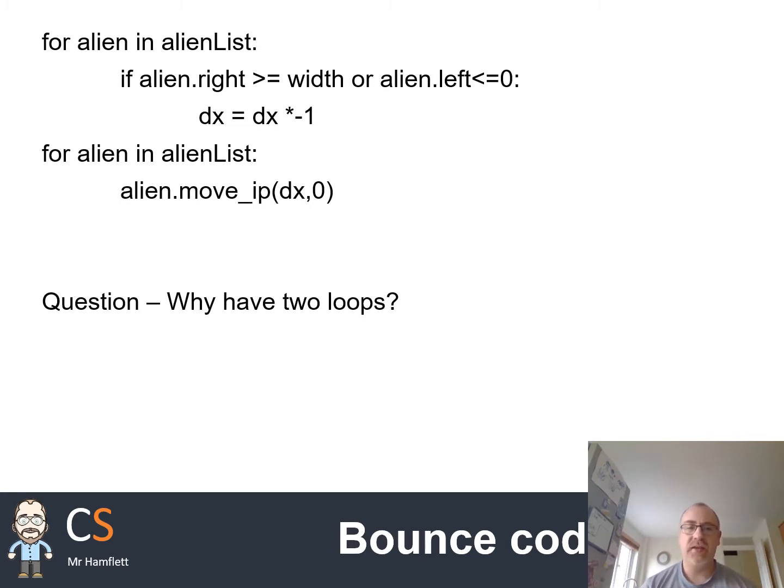The alien.move_ip is going to move the alien because it's just a rectangle. The DX equals DX times minus one changes direction. DX is controlling the direction. If it's a positive number, it's going to go to the right. If it's a negative number, it's going to go to the left. If you times a positive number by negative one, it becomes negative. If you times a negative number by minus one, it becomes positive. So it just effectively flips between right and left.